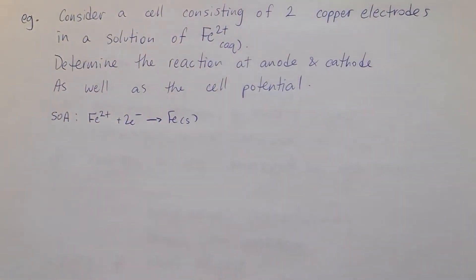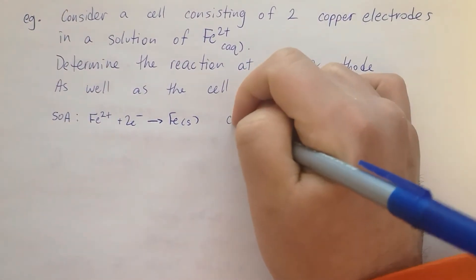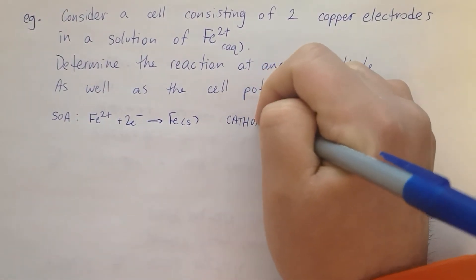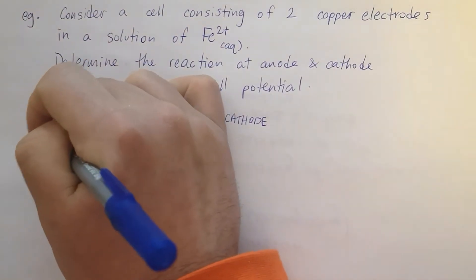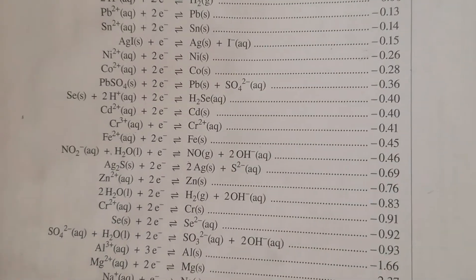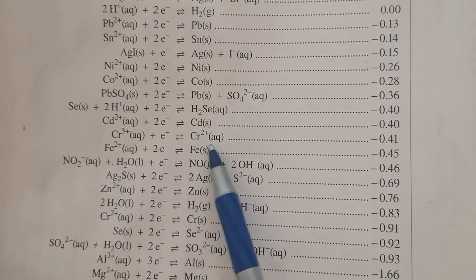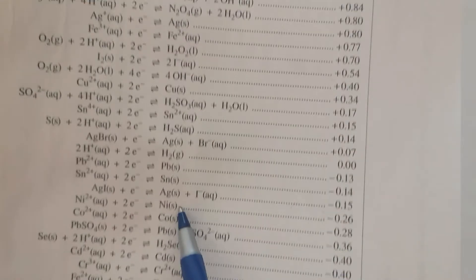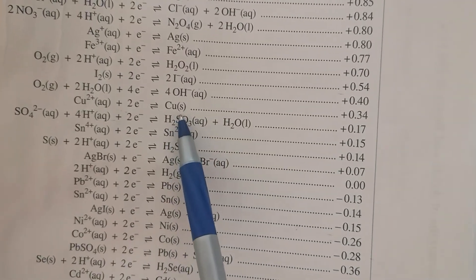We know that the SOA gets reduced at the cathode. Going through, let's find our SOA. So we don't have solid iron, we only have the iron ions. Our SOA is going to be the copper.